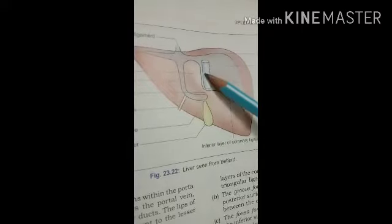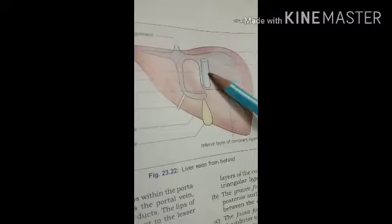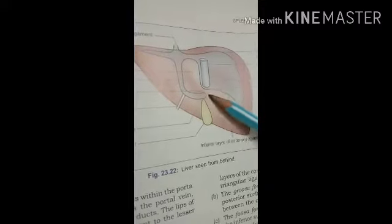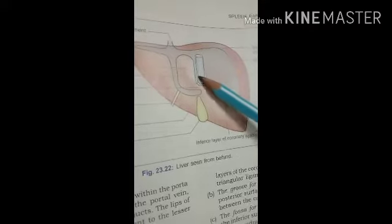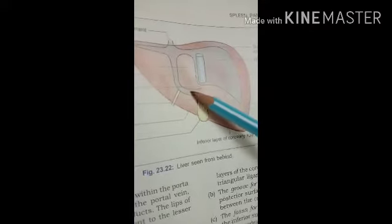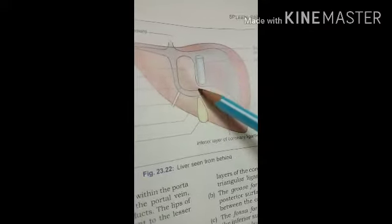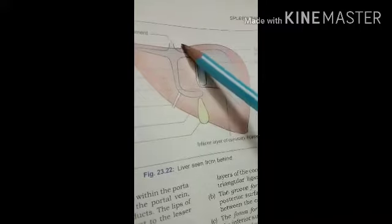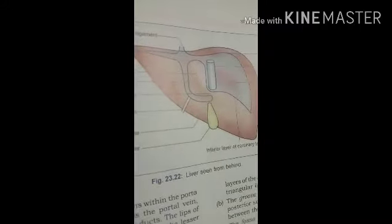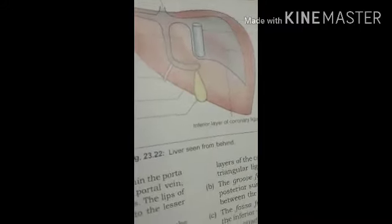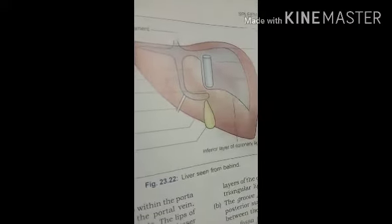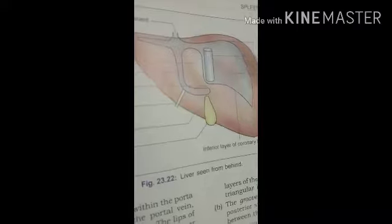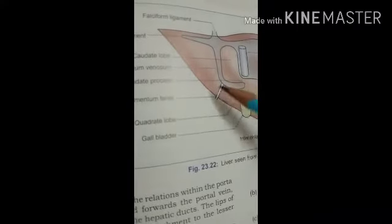The lesser omentum is attached to the margin of the fissure for the ligamentum venosum, and the horizontal limb is attached to the margin of the porta hepatis. The true ligaments include the ligamentum venosum and the ligamentum teres.